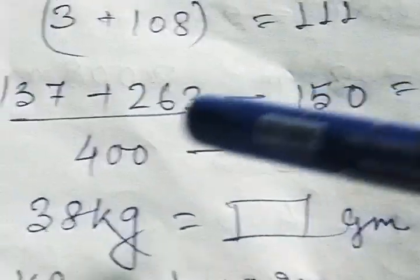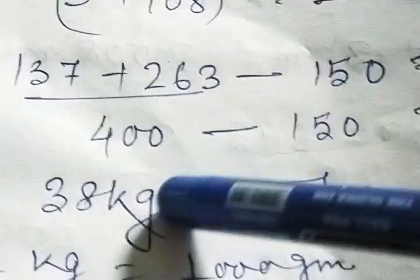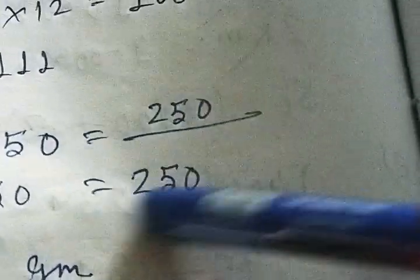Next number C. 137 plus 263 minus 150 equal to what? At first we add the numbers, answer will be 400. Again subtract 150, so the answer will be 250.